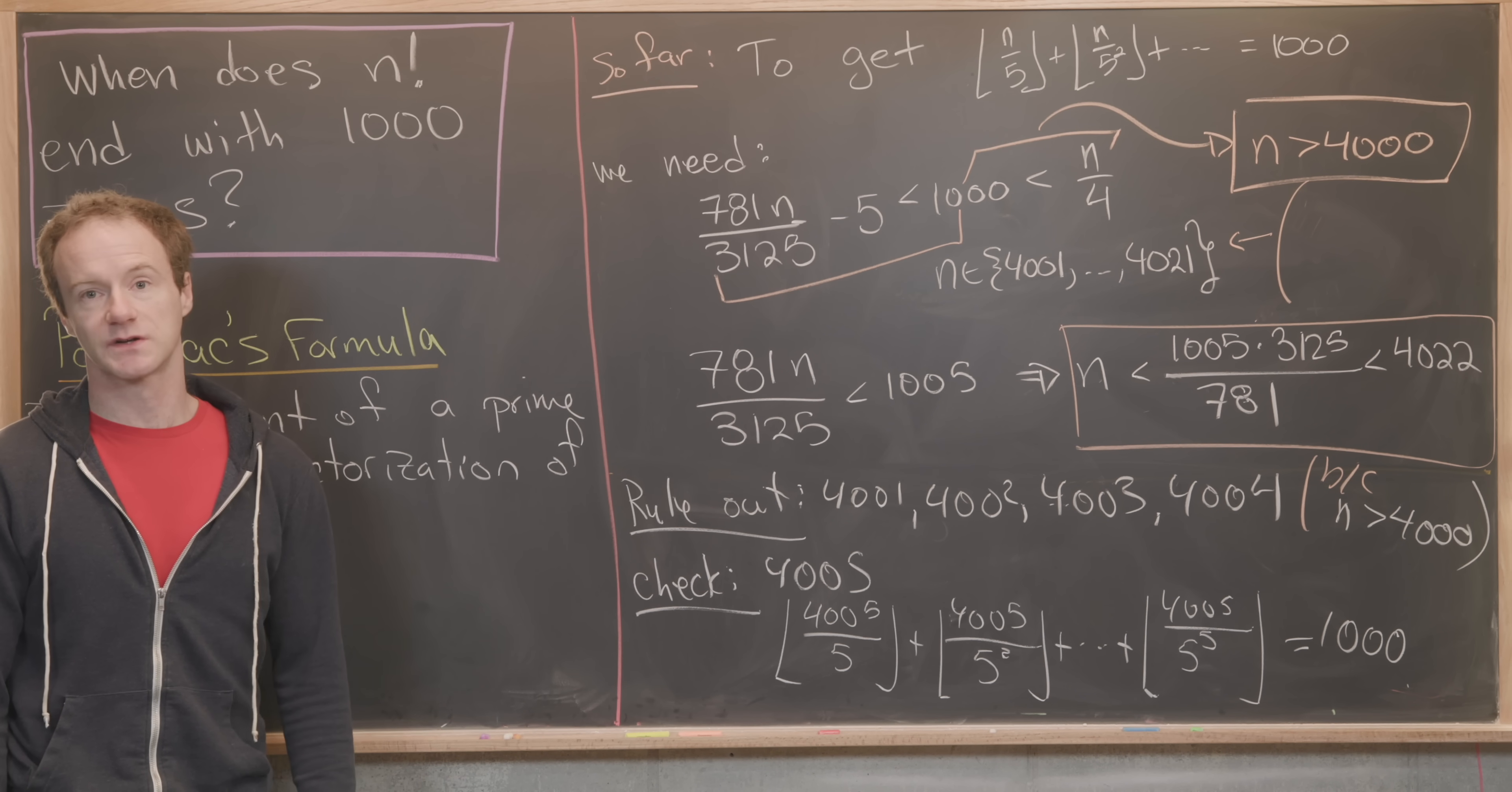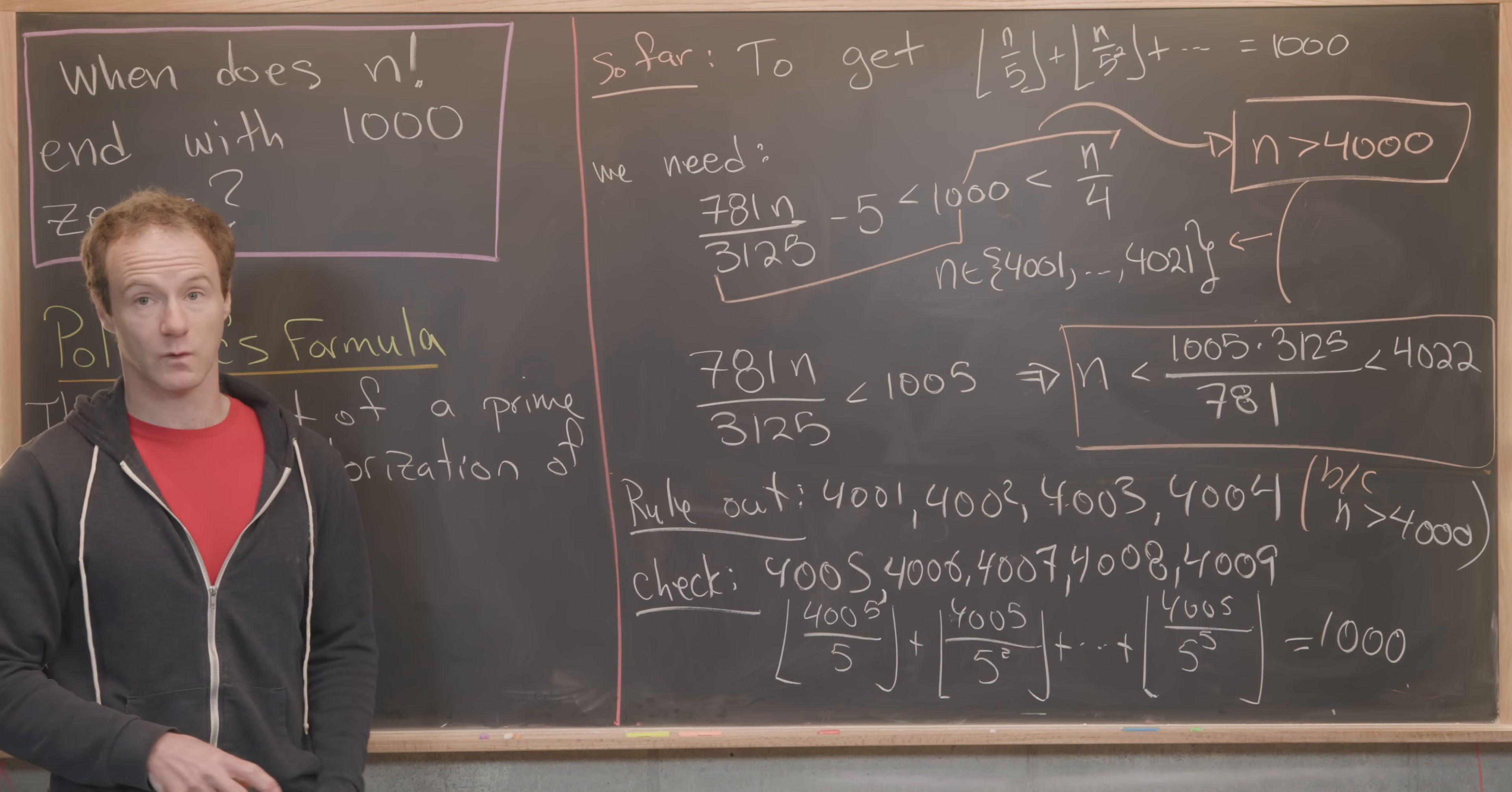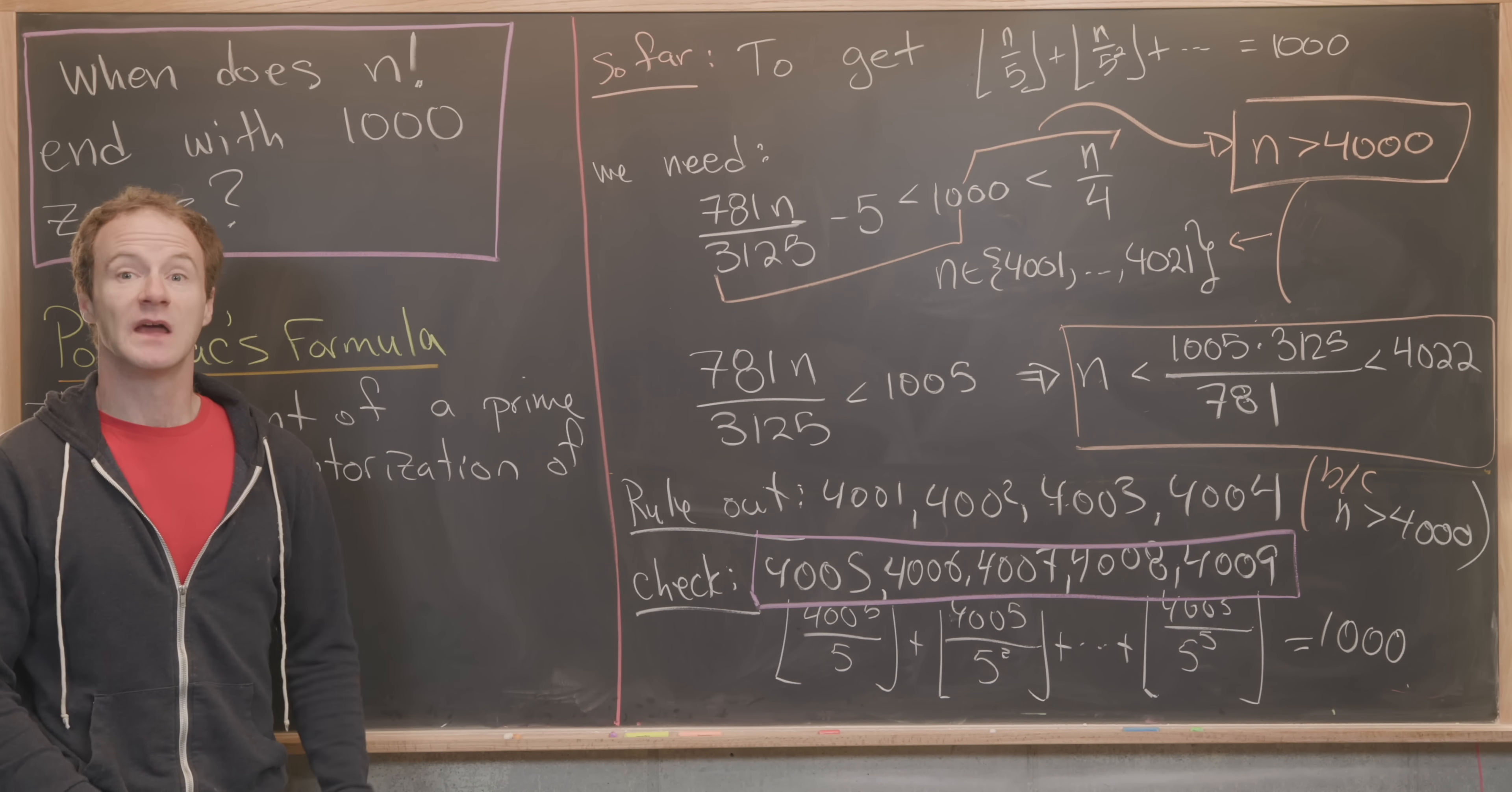Since 4005 works, that means we get the next four numbers for free. We get all of the next four numbers work because we have not yet hit another multiple of 5. In other words, 4006, 4007, 4008 and 4009 also work. But then 4010 will not work because that gives us one larger number from this portion of the sum than 4005 did. That means we'll get something larger in the total outcome than 1000. So in the end, we have these five solutions: 4005 all the way up to 4009. That's a good place to stop.